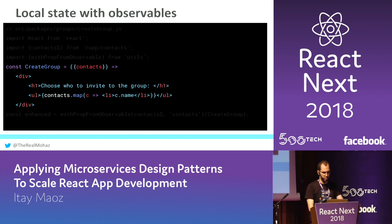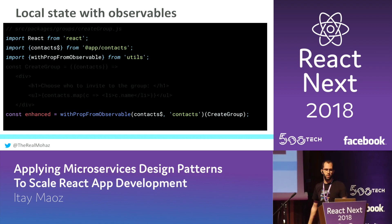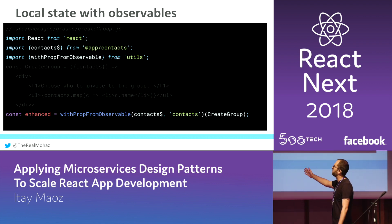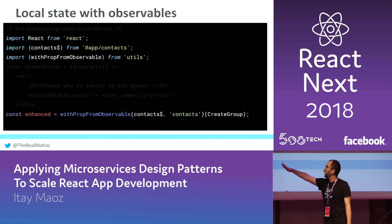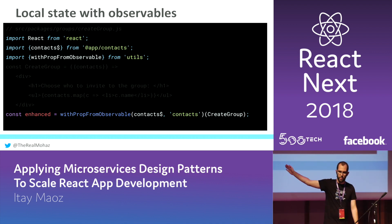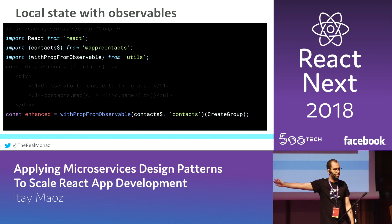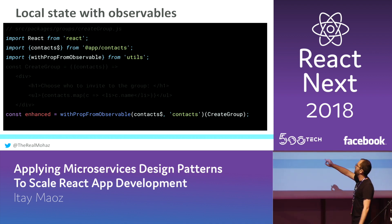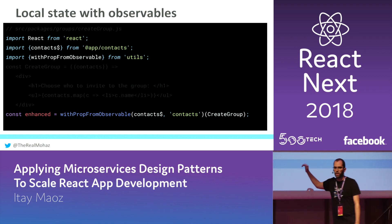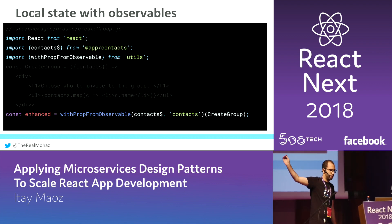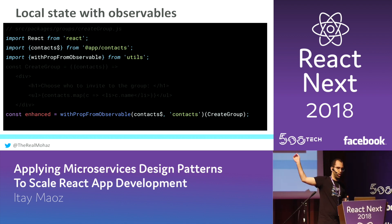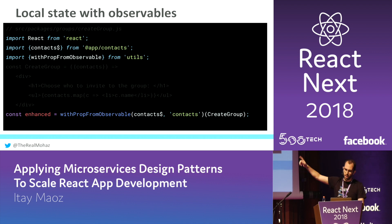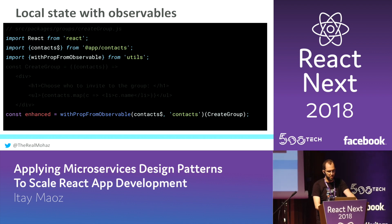Let's see how we're going to consume this piece of state. Say we have a group messaging feature and want to allow creating a new group — when you create a new group, you need to choose from your existing contacts. So the create group component relies on contacts passed to it as a prop. We import the observable from the contacts package, and using a higher-order component, we inject the latest value of the contacts observable into the contacts prop of the create group component. Every time this list changes, our component gets updated as well.